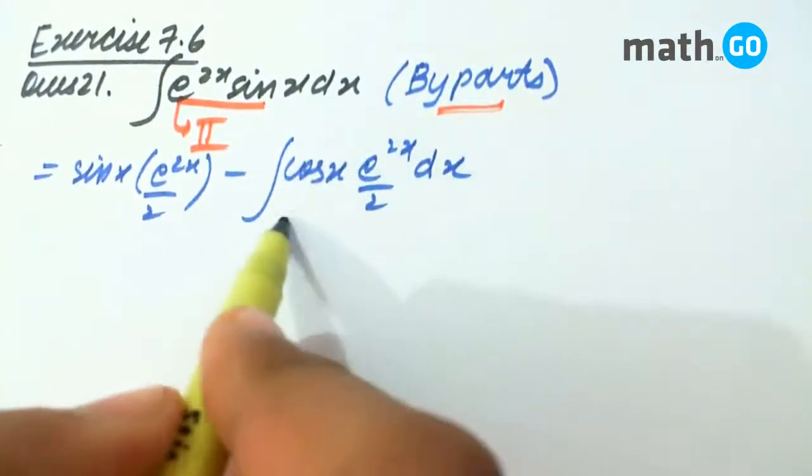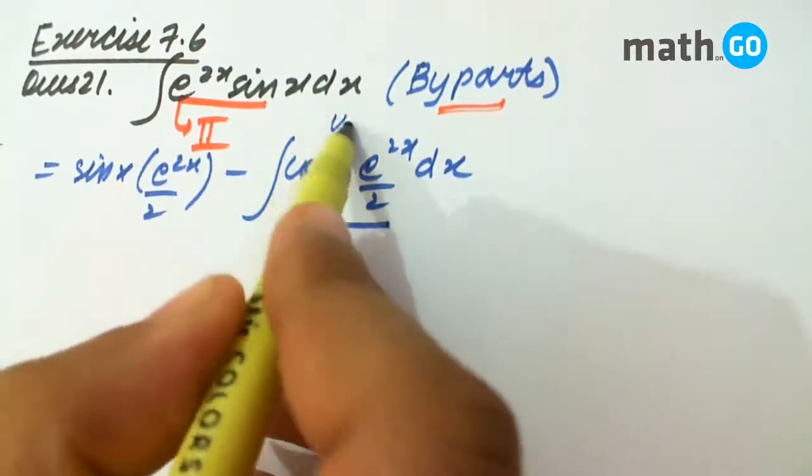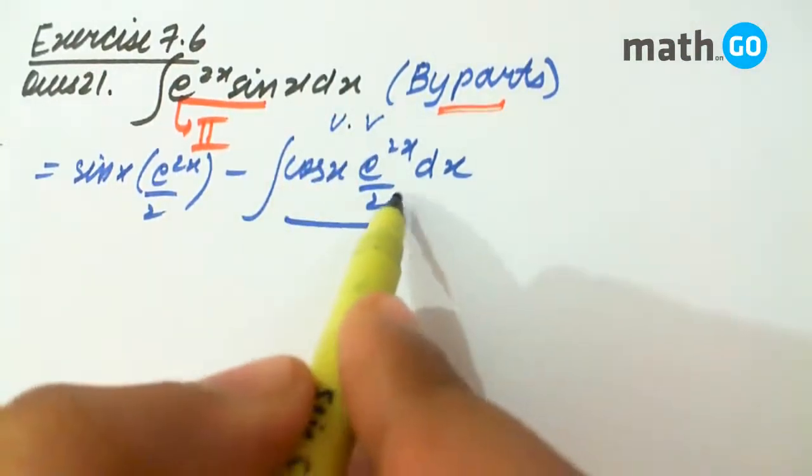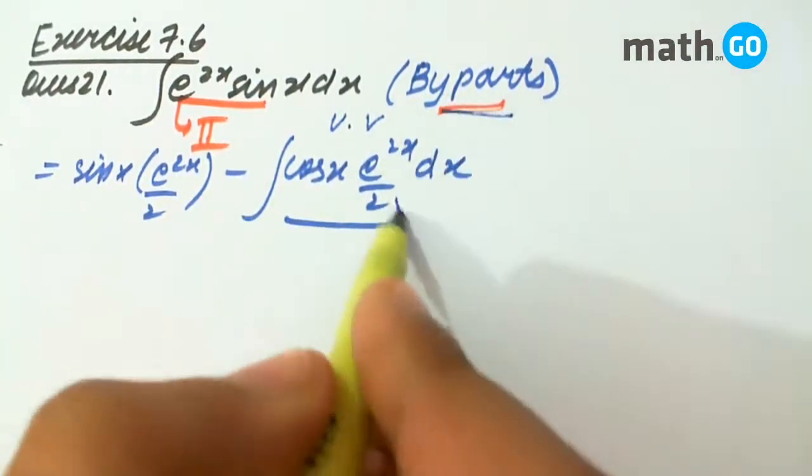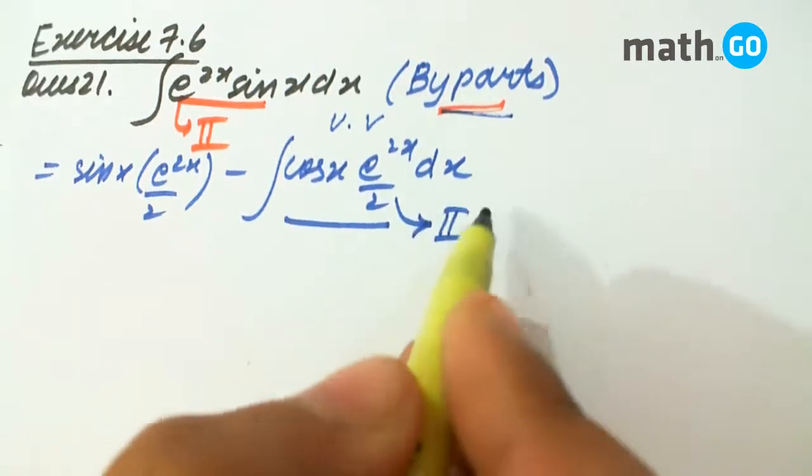Now we see this again is of the form u into v, so again we have to apply integration by parts, taking this as the second function.